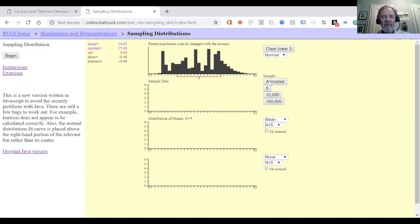Let's consider a sample of five values. We'll animate that. One, two, three, four, five. And then below we have the sample mean. Another five. One, two, three, four, five. And another sample mean.